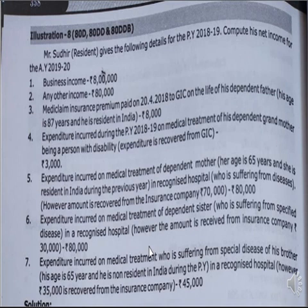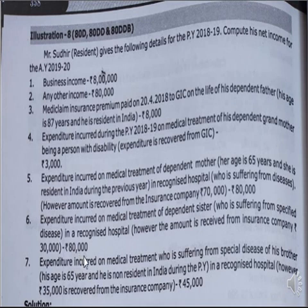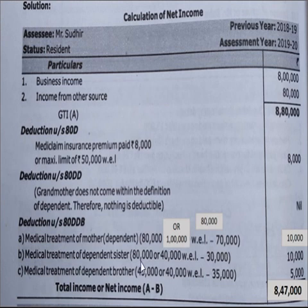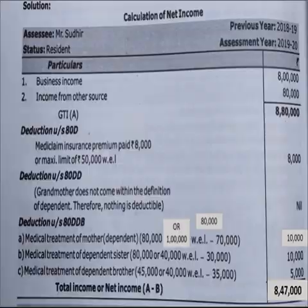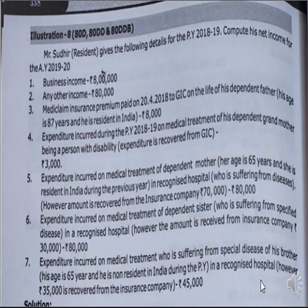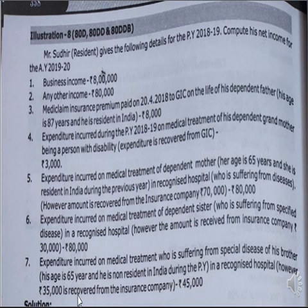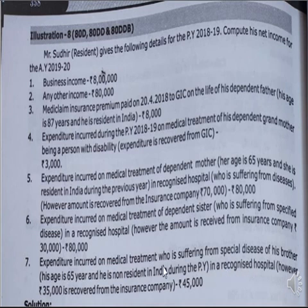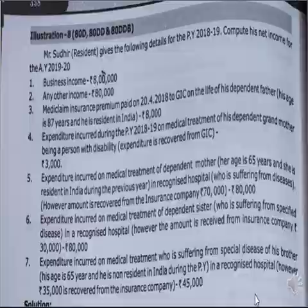Expenditure on medical treatment of dependent sister suffering from a specified disease — she is a non-senior citizen, so maximum limit is 40,000. Expenditure is 80,000 vs. 40,000 — whichever is less, 40,000. Less the amount received from insurance company: 30,000. So eligible deduction: 40,000 minus 30,000 = 10,000. Medical treatment of dependent brother suffering from a specified disease — his age is 65 and he is non-resident in India during the previous year. Even though the assessee's brother is non-resident, only 40,000 is the eligible deduction limit. 45,000 vs. 40,000 — whichever is less, 40,000. Less amount received from insurance company: 35,000. Balance eligible: 5,000.